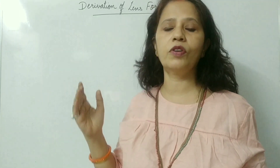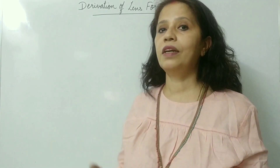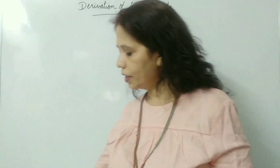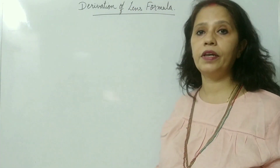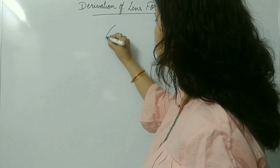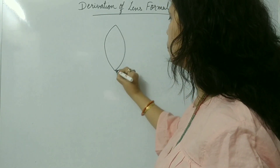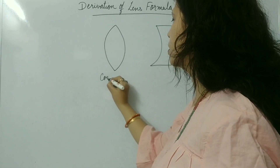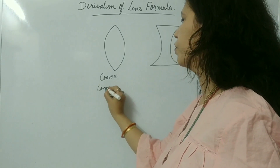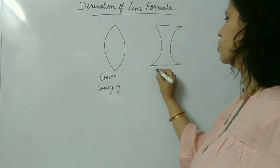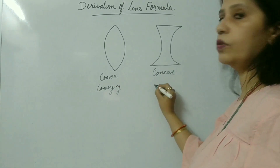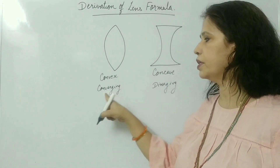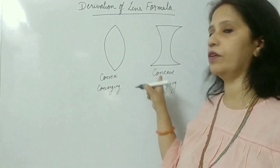Before that, let us recall the optical terms like optical center, center of curvature, principal focus, principal axis, and so on. There are two types of lenses: one is convex, also known as converging, and the other is concave, also known as diverging. In many numericals it will be written as converging and diverging, not as convex and concave.